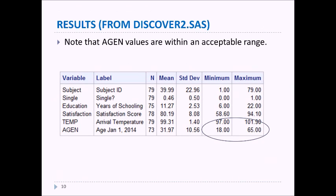When we rerun discover2.sas again we now see that AGEN is within the bounds that we would assume and all of the other information is also within bounds.